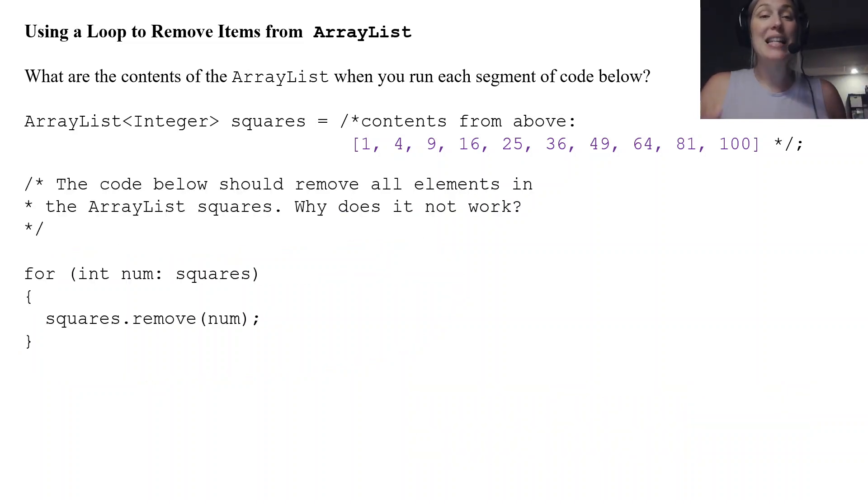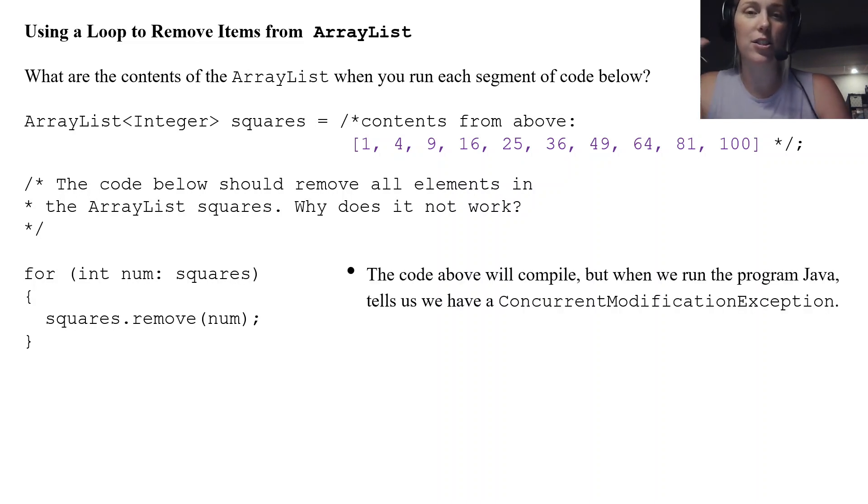So it's going to be the same thing with this segment of code too. This is a for each loop. It wants to remove all the elements, but it does not work. At first glance, the syntax looks great, right? For every int num in the squares, remove num. Because all of the numbers are there. There's current elements. The syntax looks good. It is in fact not good. And I'll explain in a moment why. Actually, let's just explain it now.